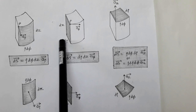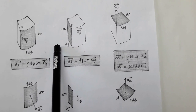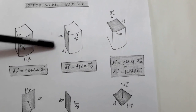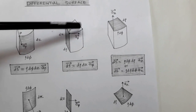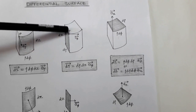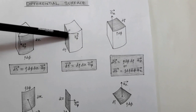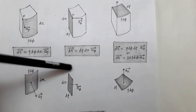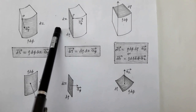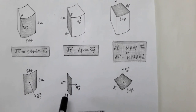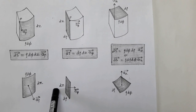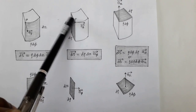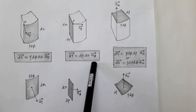The second differential surface is the face whose outward normal is in the direction of unit vector phi. This face has dimensions d-rho by dz, so its differential surface area is d-rho · dz. Therefore, the differential surface in the phi-direction is: dS_phi = d-rho · dz · â_phi.